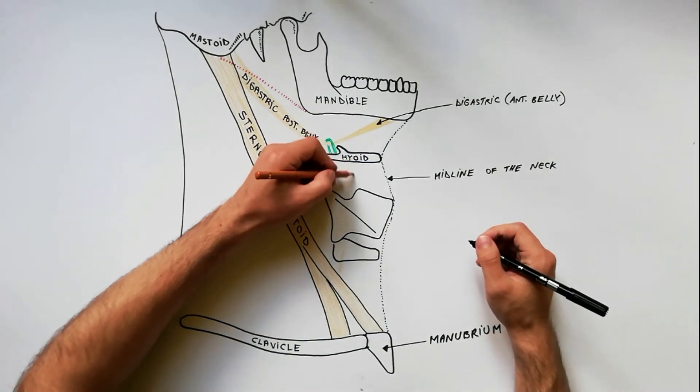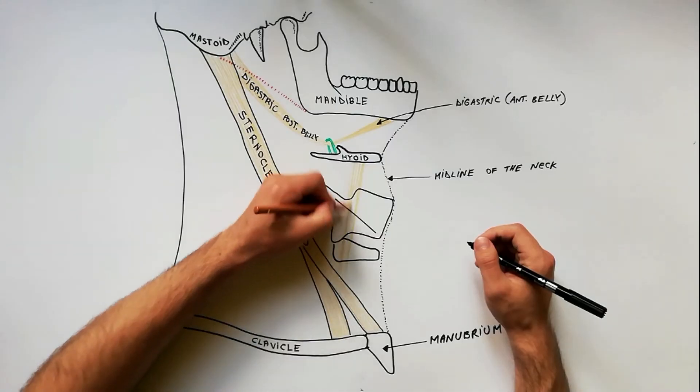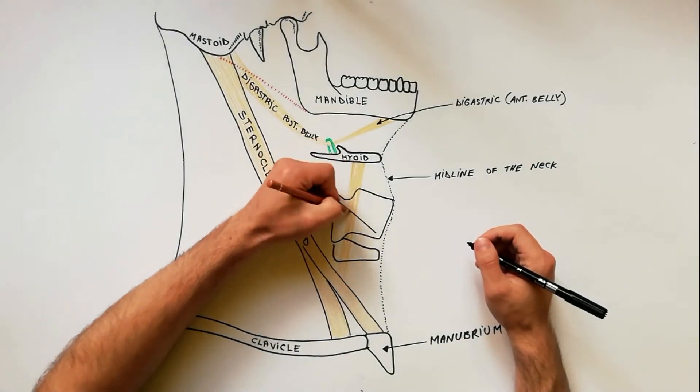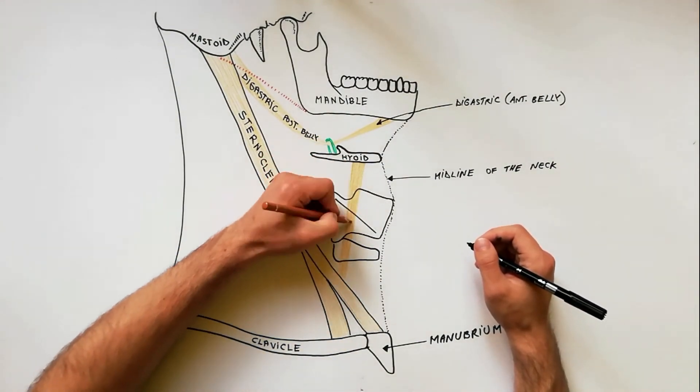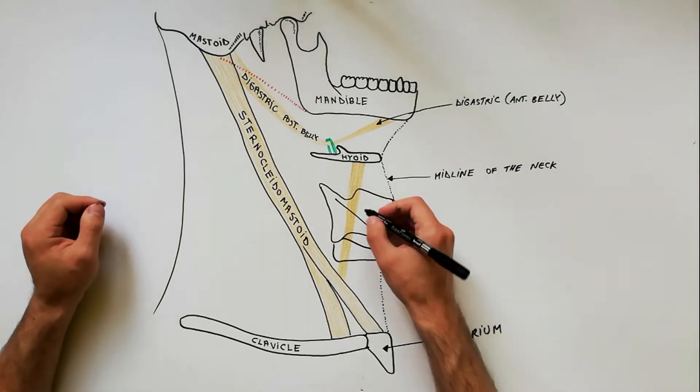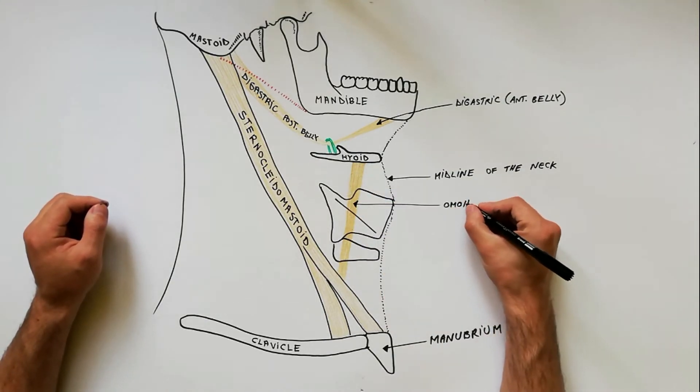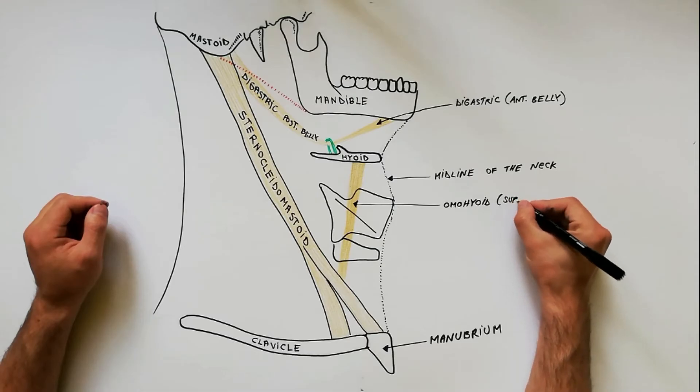The superior belly of omohyoideus spans almost vertically the infrahyoid region coming from under the sternocleidomastoidus to be inserted into the lower border of the hyoid bone.